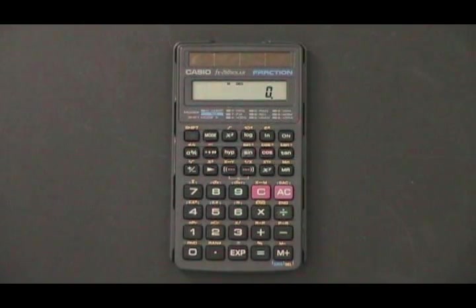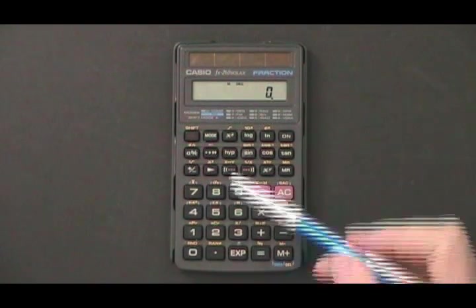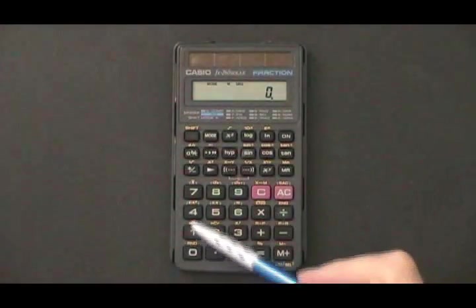Remember that your calculator has to be in degree mode whenever you do trigonometry. To get this type of calculator in degree mode, you press the mode button and 4.